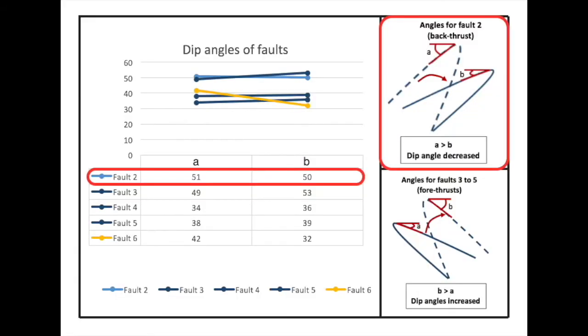Now observe how the faults tilt. From the diagram, we can tell that the angle of the backthrust becomes smaller as the wedge grows and the faults get tilted backwards.